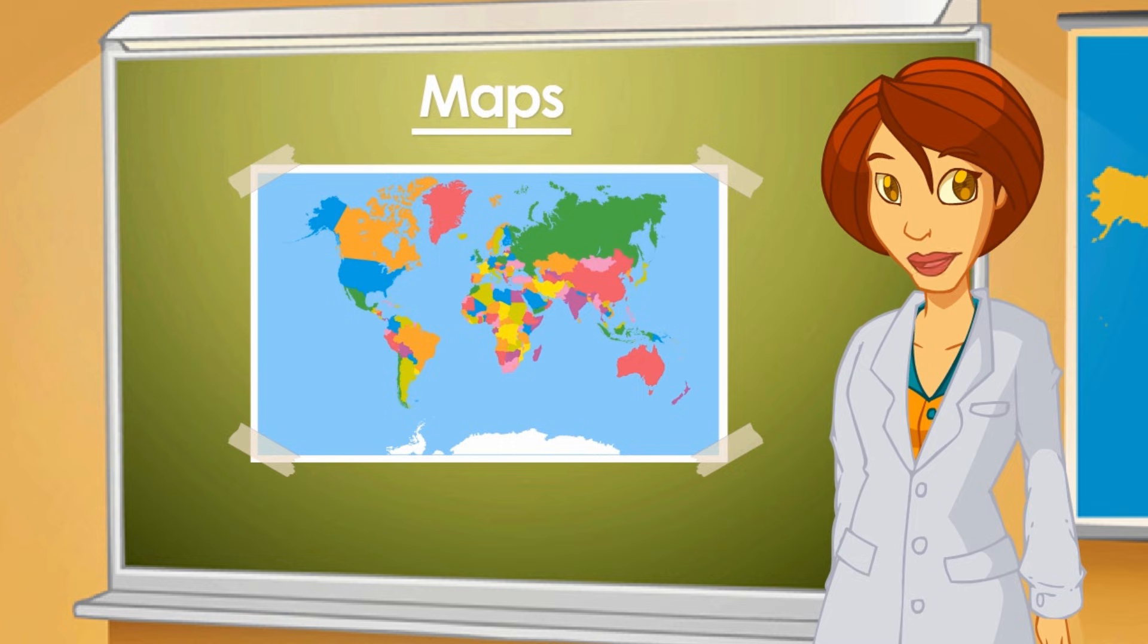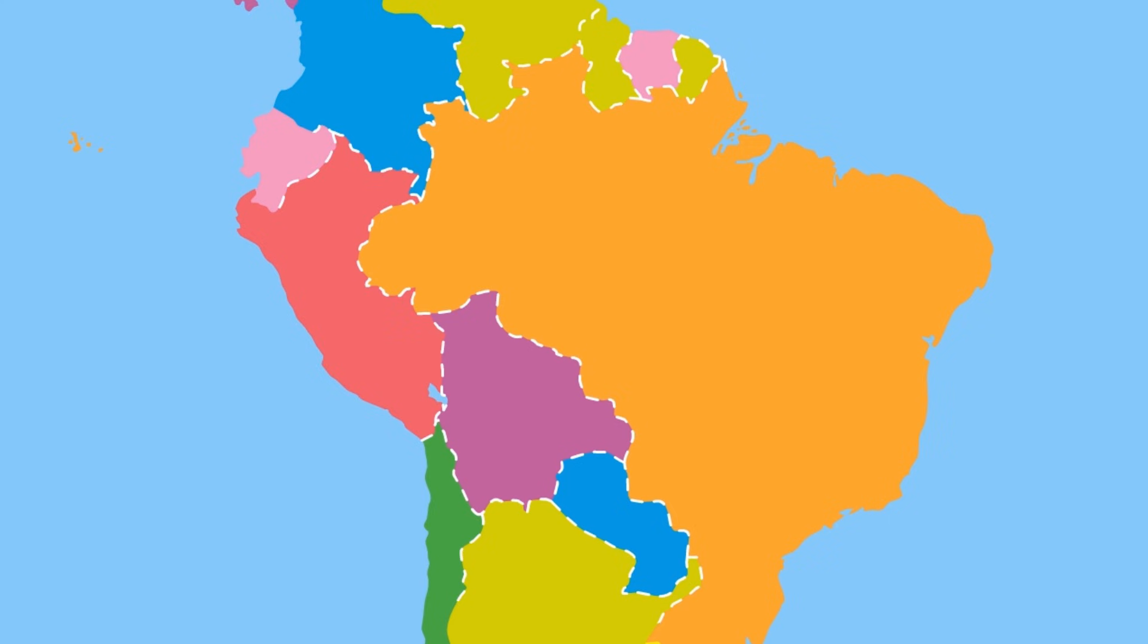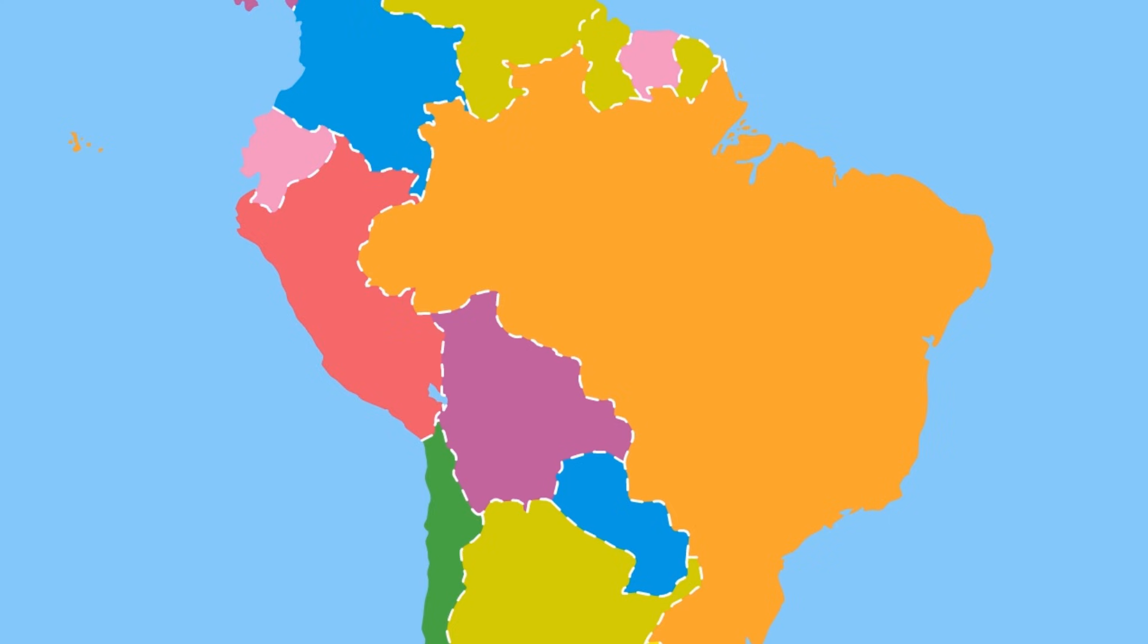Country borders have been drawn on the photograph. What are the borders, Miss? They are lines that divide each country and show where a country starts and where it ends.